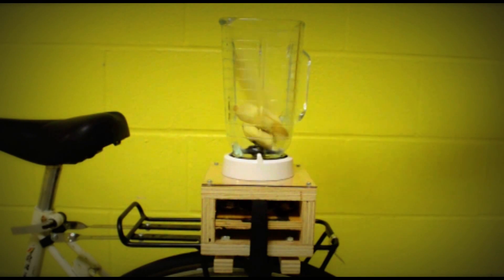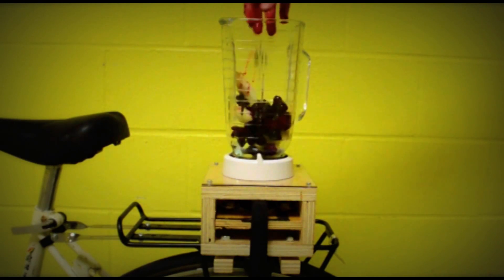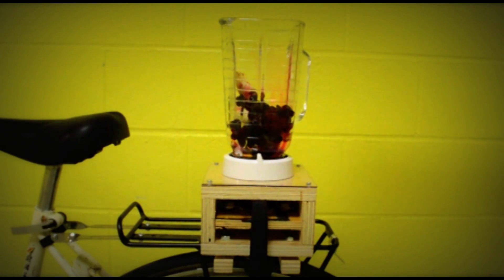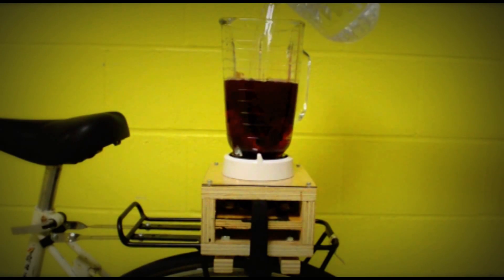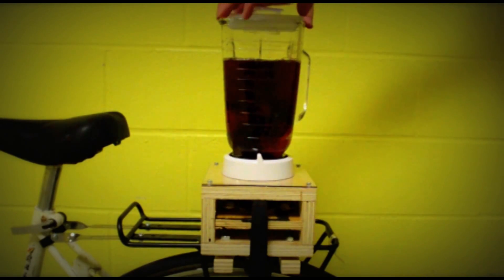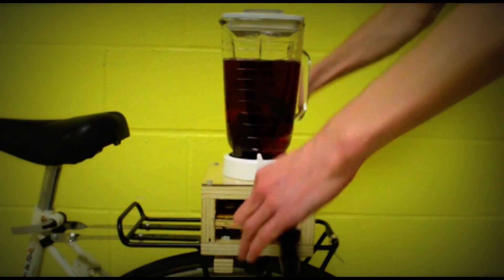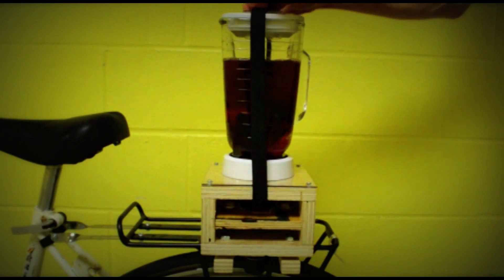Now you get to enjoy the fruits of all that hard work. Our favorite smoothie recipe involves two bananas, a handful of frozen berries, a couple of pitted dates, and water to fill. If you're feeling adventurous, you can also add some chopped spinach or another green. Put the lid on and pedal away.